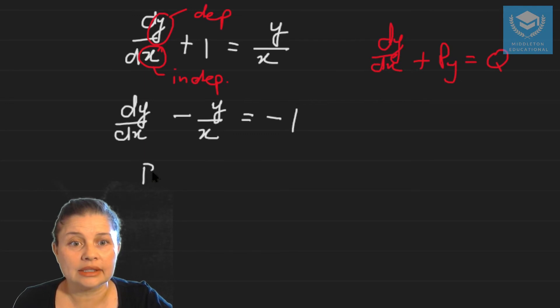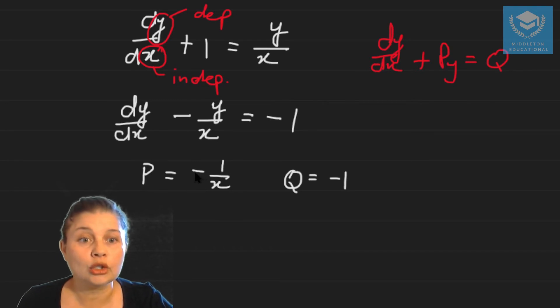So that means that the p is going to be minus one over x and our q is going to be minus one. Please note here the p includes the negative sign. Always do that. Don't ignore the negative sign because it affects your answer.